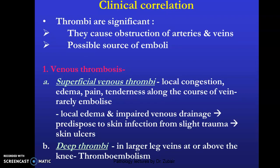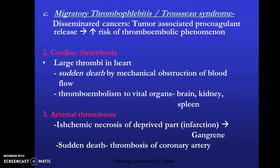Clinical correlation: thrombi are significant because they cause obstruction of arteries and veins and are possible sources of emboli. Venous thrombosis can lead to superficial venous thrombi with local congestion, edema, pain, and tenderness along the course of the veins, and deep vein thrombosis in larger veins at or above the knee. Migratory thrombophlebitis (Trousseau syndrome) is seen in disseminated cancers with procoagulant phenomena. Cardiac thrombi can cause sudden death by mechanical obstruction of blood flow, or thromboembolism to vital organs such as the brain, kidney, and spleen. Arterial thrombosis can cause gangrene, and coronary artery thrombosis can cause sudden death.